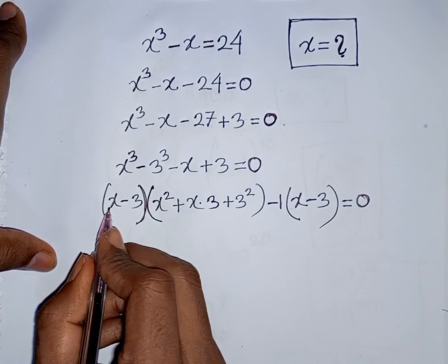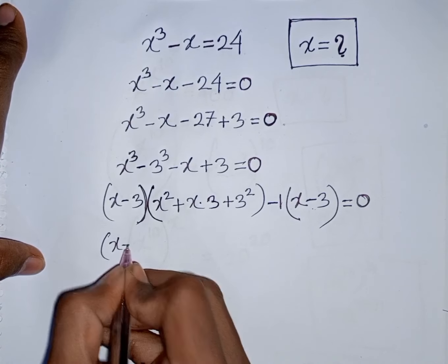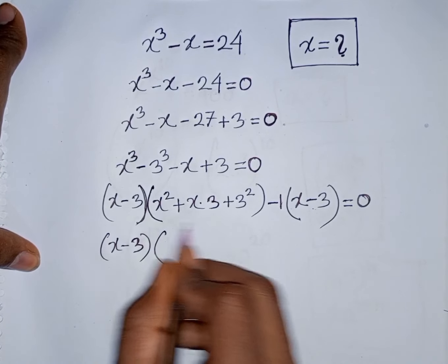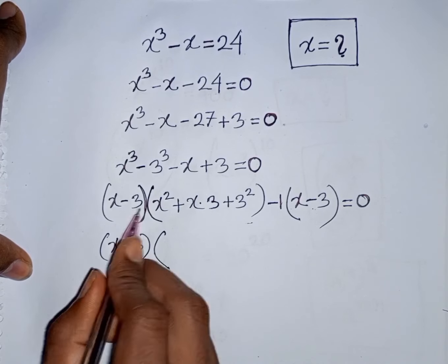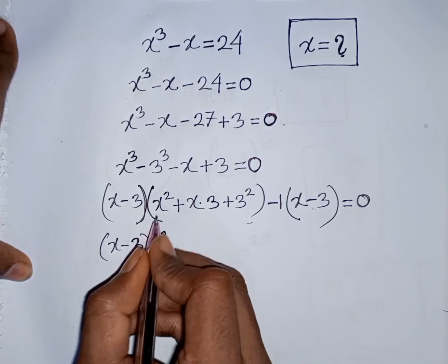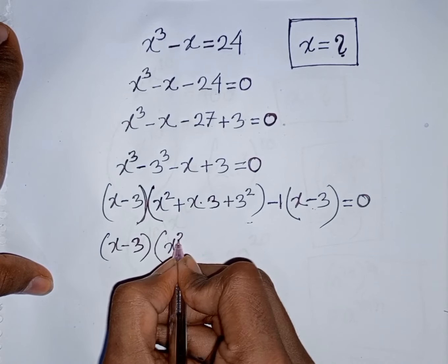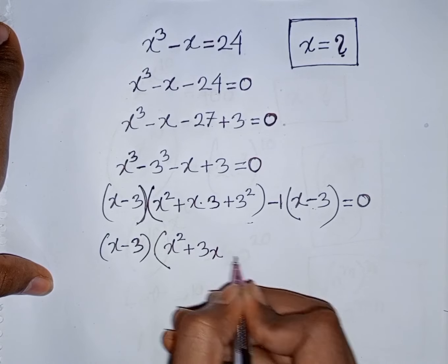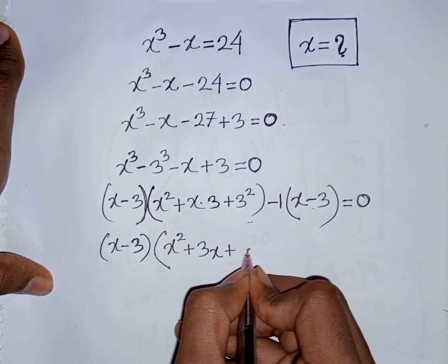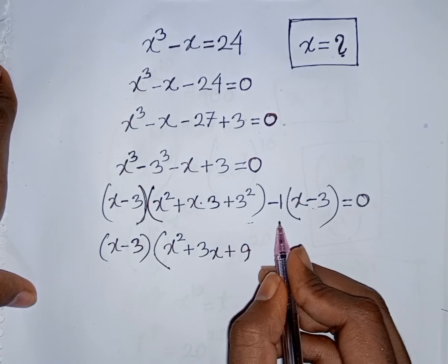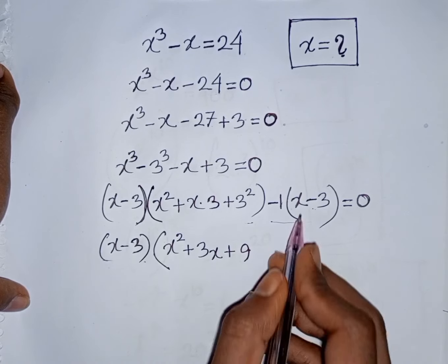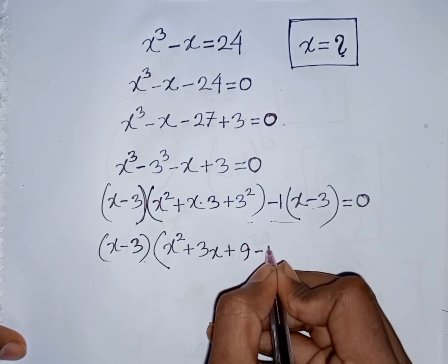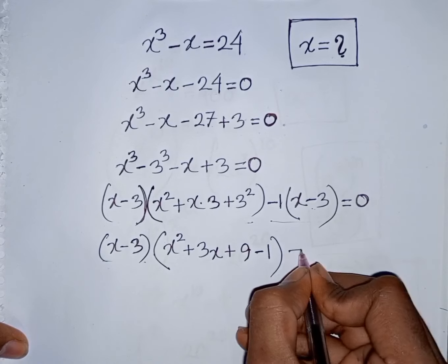Now we take common x minus 3. So bracket x minus 3 is out of this bracket. This divided by this — x minus 3 will be cancelled. So we have x square plus x times 3, that means 3x, then plus 3 squared which is plus 9. Then this divided by this, x minus 3 will be cancelled, leaving minus 1. Bracket close is equal to 0.